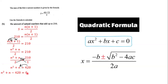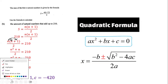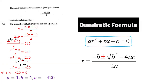We can use the quadratic formula because we have a quadratic equation. The general form of a quadratic equation is ax² + bx + c = 0, where a is the coefficient of x squared, b is the coefficient of x, and c is the constant.